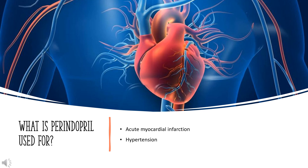What is perindopril used for? It is used for the treatment of mild to moderate essential hypertension, mild to moderate congestive heart failure, and to reduce the cardiovascular risk of individuals with hypertension or post-myocardial infarction and stable coronary disease.